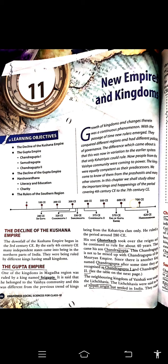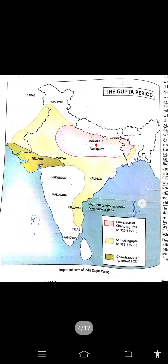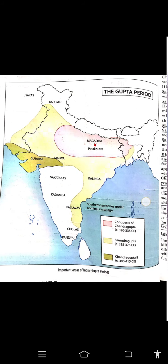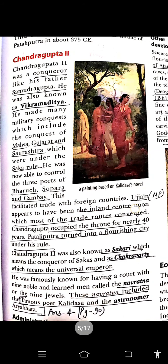So what is the name of this chapter? Chapter number 11 of history: New Empires and Kingdoms. We have already read about the decline of the Kushana Empire, the Gupta Empire, Chandragupta 1st, Samudragupta, and Chandragupta 2nd. This is the map of the Gupta Empire during the Gupta period. So we can take a quick recap. Chandragupta 2nd was a conqueror like his father Samudragupta, and he is also known as Vikramaditya.